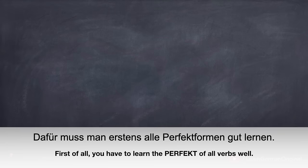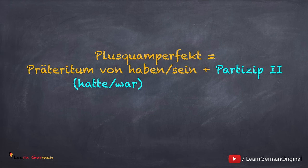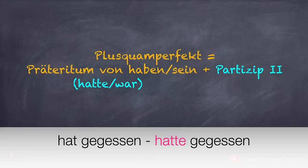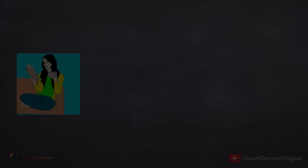Wie bildet man Plusquamperfekt? Dafür muss man erstens alle Perfektformen gut lernen. Plusquamperfekt bildet man mit Präteritum von haben oder sein — das heißt war oder hatte — plus Partizip 2. That means you take the Präteritum of the helping verb and the Partizip 2 of the verb to make the Plusquamperfekt. Zum Beispiel: hat gegessen im Plusquamperfekt ist hatte gegessen, und ist gegangen ist war gegangen.